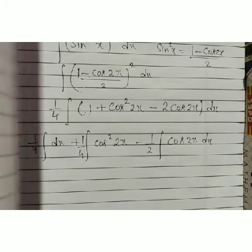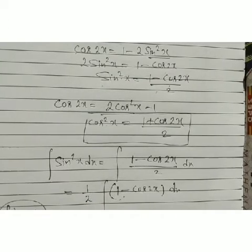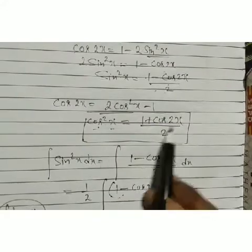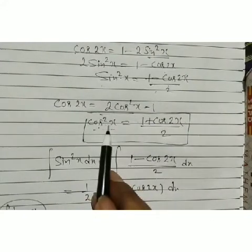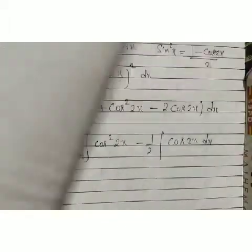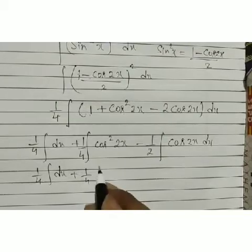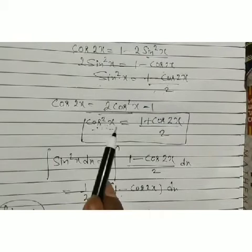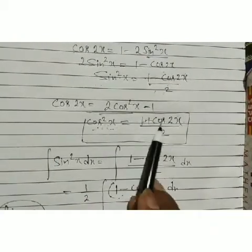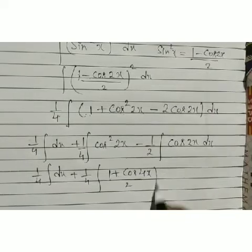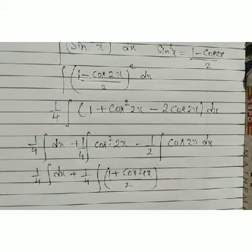Now we need to handle cos²2x. Using the same identity with 2x in place of x: cos²2x = (1 + cos 4x)/2. So we substitute: (1/4)∫1 dx + (1/4)∫(1 + cos 4x)/2 dx − (1/2)∫cos 2x dx. This becomes: (1/4)∫dx + (1/8)∫dx + (1/8)∫cos 4x dx − (1/2)∫cos 2x dx.